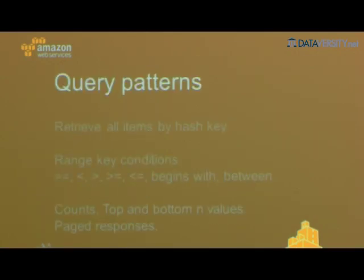For query patterns, if you use the hash-and-range composite key as your primary key, you can do predicates: equals, less than, greater than, greater than or equal to, begins with, in between. You can do counts, retrieve top or bottom values, and do paged responses — you get a page token to retrieve the next set of results and iterate.